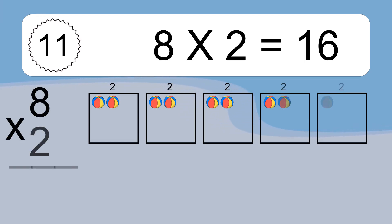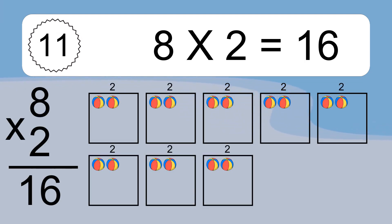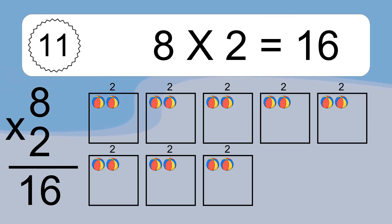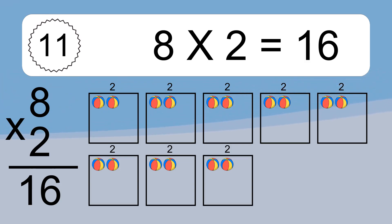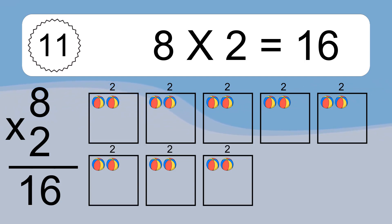8 times 2 equals what? 8 times 2 equals 16. We have 8 boxes, and each box has 2 colorful balls inside. If you count all the balls in all the boxes together, you will have 8 times 2 balls. This equals 16 balls.